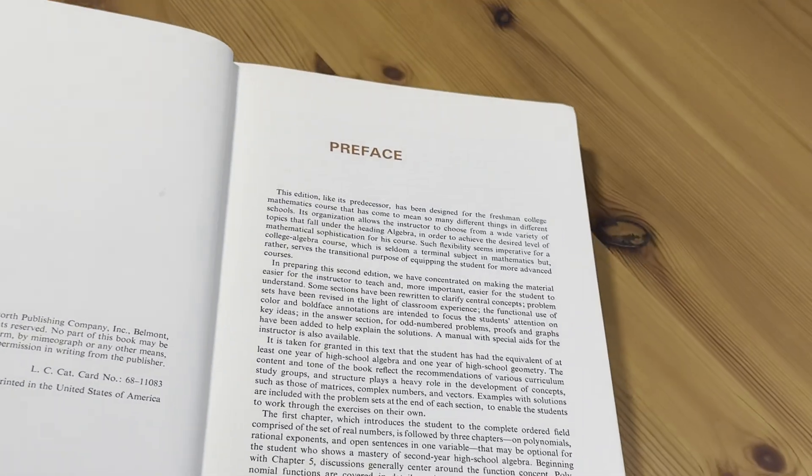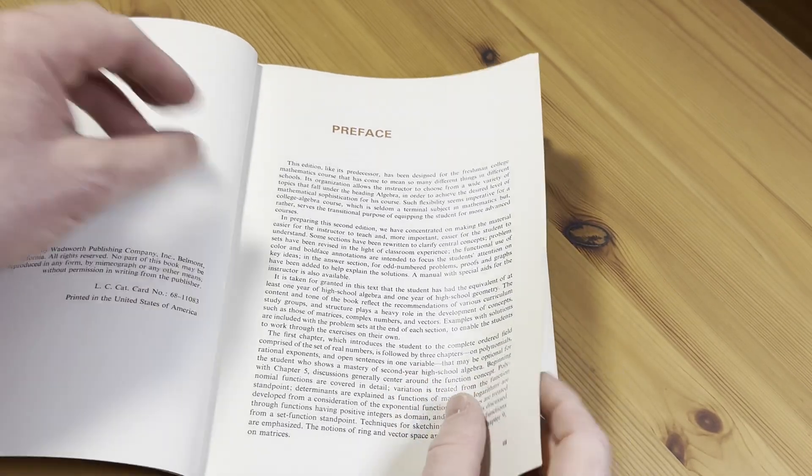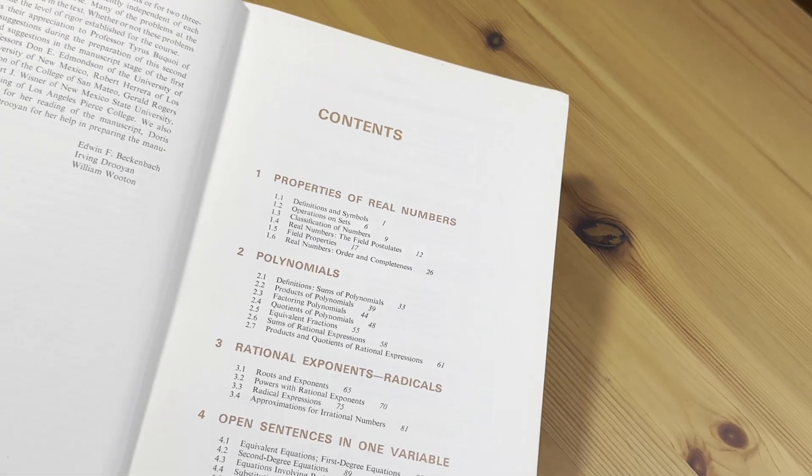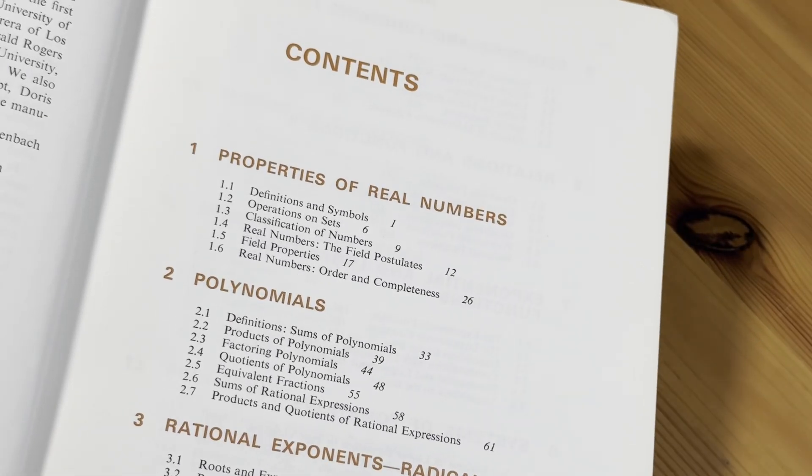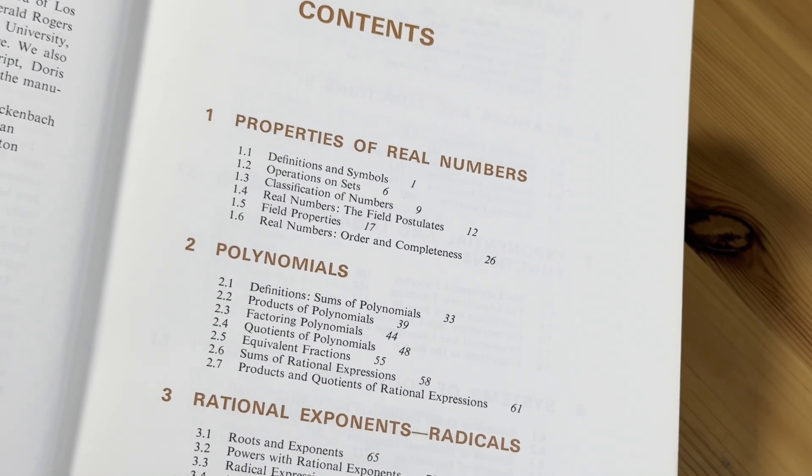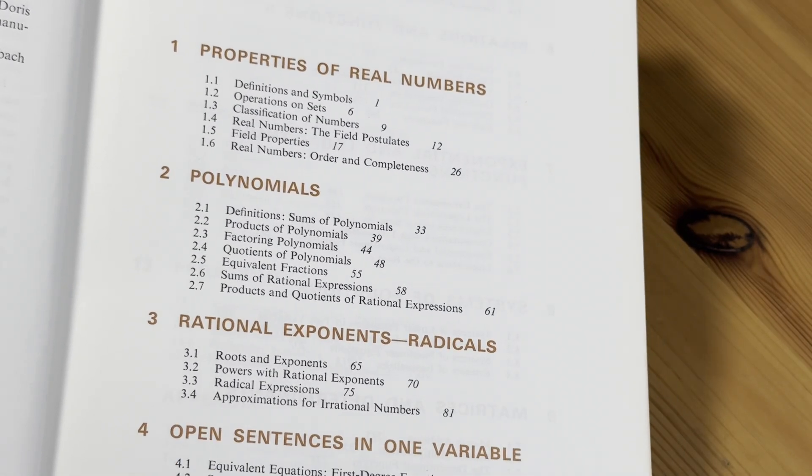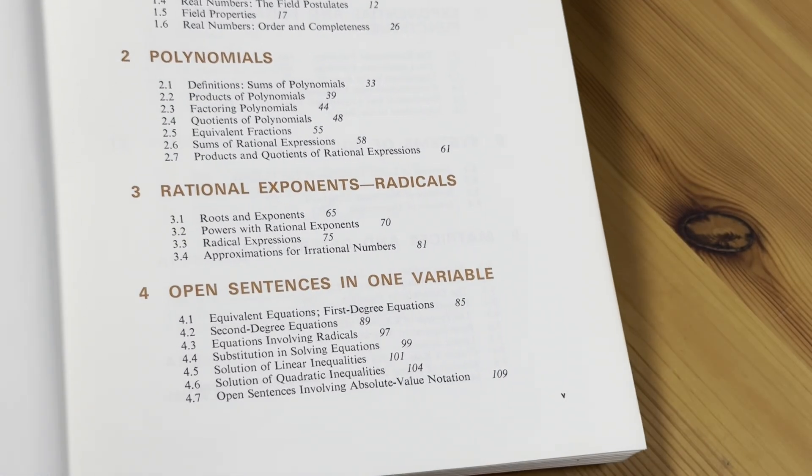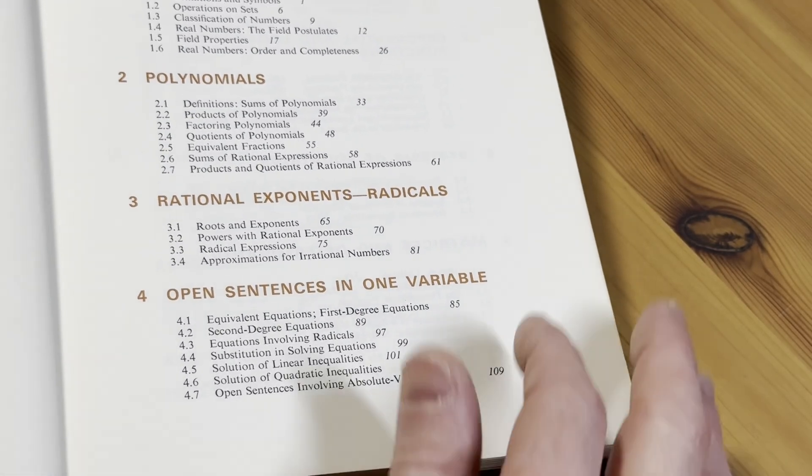Let's skip the preface and go straight to the contents so you can see what this book actually contains. So here are the contents: the properties of real numbers, polynomials, rational exponents, radicals, and then open sentences in one variable.